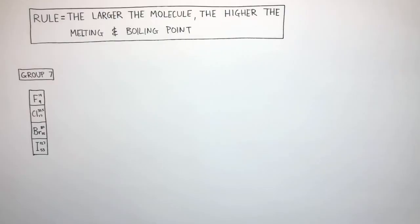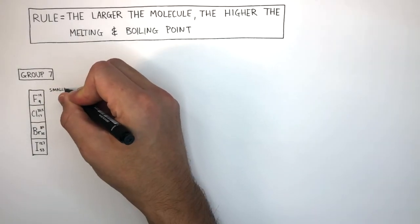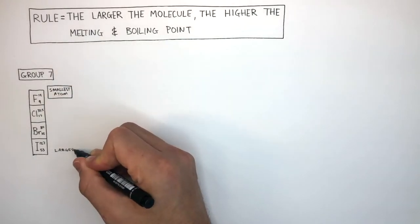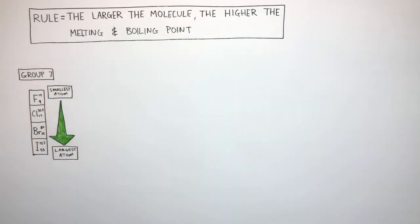We're going to use Group 7 elements to understand how the larger the molecule, the higher the melting and boiling point. Fluorine has the smallest atom and iodine has the largest atom. The size of the atoms increases as you go down Group 7.